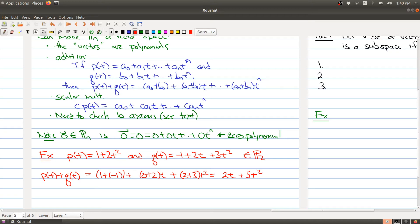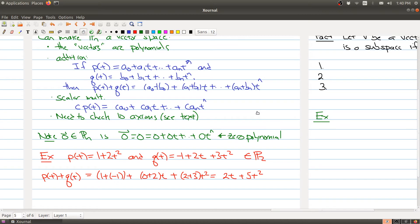And so that gives you an example of the polynomial addition. So it gives you a different vector space.